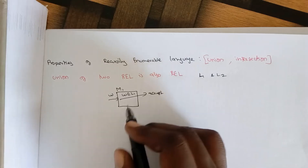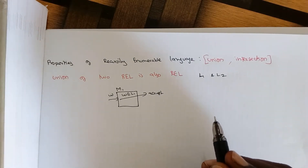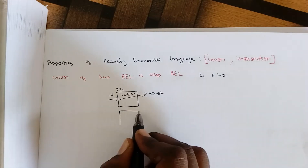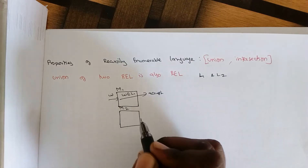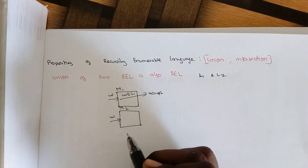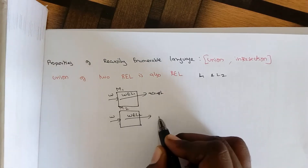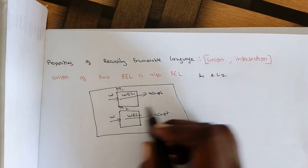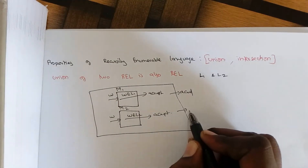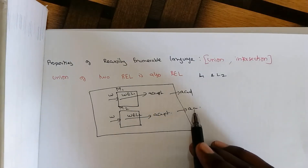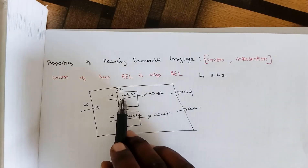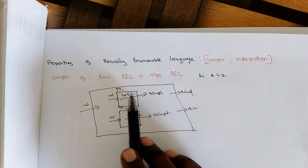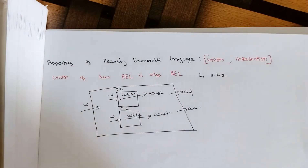Similarly, since L2 is also a recursively enumerable language, we can construct a Turing machine M2. We send input W to M2; if the input belongs to L2, it will be accepted. So, if the input is accepted by machine M1, we accept it; if accepted by machine M2, we accept it. If any of the machines accepts the input, we accept it. Therefore, the union of two recursively enumerable languages is again recursively enumerable.